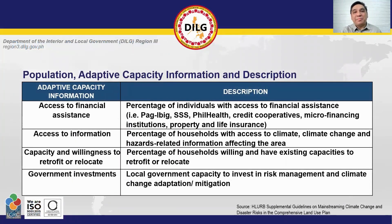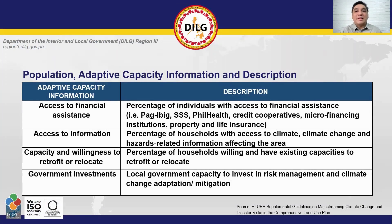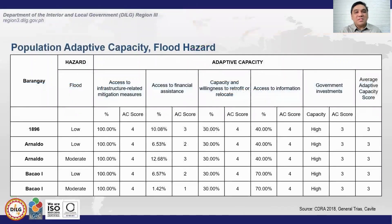For population adaptive capacity, you will determine the exposed households' access to financial assistance, access to information, capacity and willingness to retrofit or relocate, and government investments. Most likely, you have to ask from key offices and barangay personnel about this information. This is an example of a population adaptive capacity table, which has a similar format and scoring parameters as the population sensitivity.